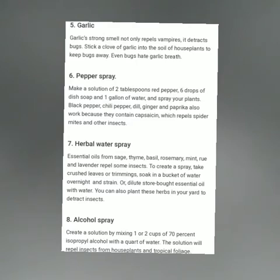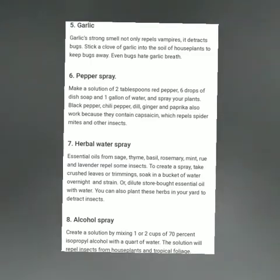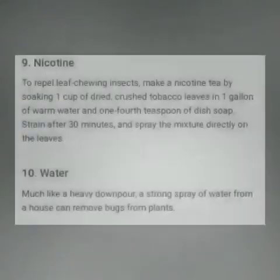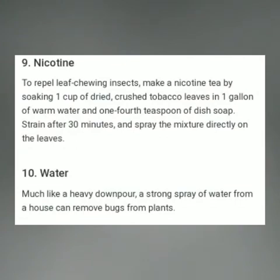You can also plant these herbs in your yard to deter insects. Next is alcohol spray — create a solution by mixing 1 to 2 cups of 70% isopropyl alcohol with a quart of water; this repels insects from house plants and tropical foliage. Next is nicotine: make nicotine tea by soaking 1 cup of dried crushed tobacco leaves in 1 gallon of warm water with 1 teaspoon of dish soap. Strain after 30 minutes and spray directly on the leaves.